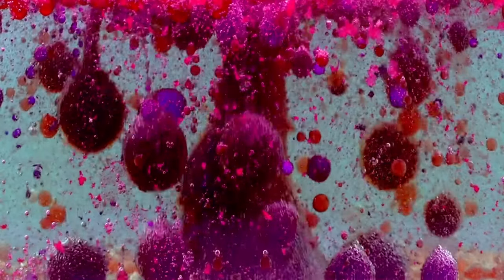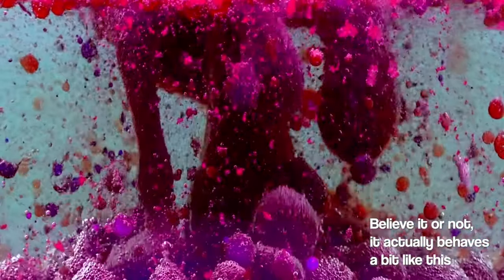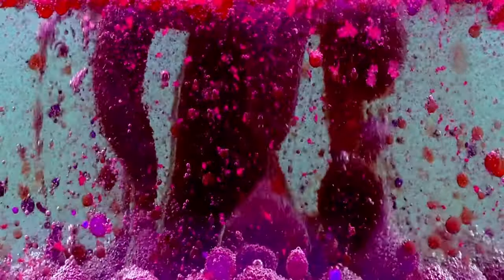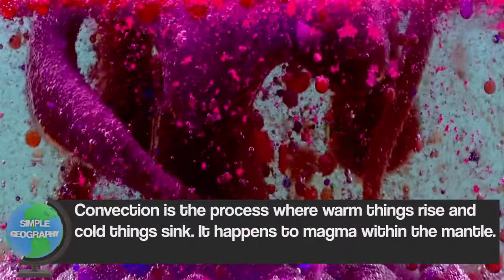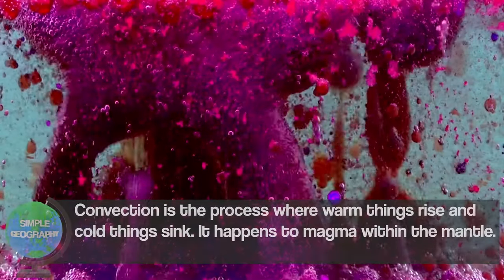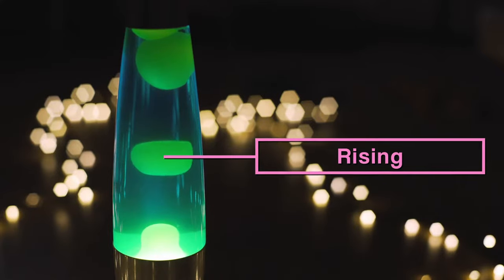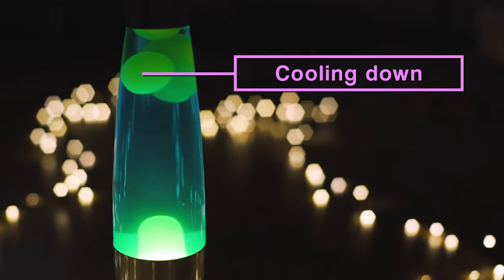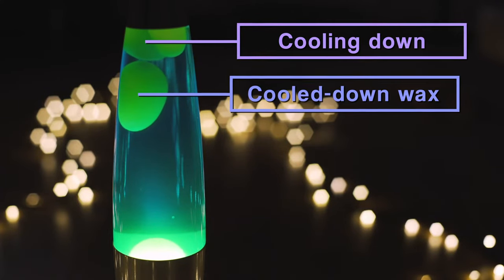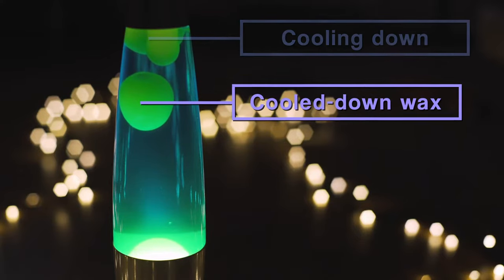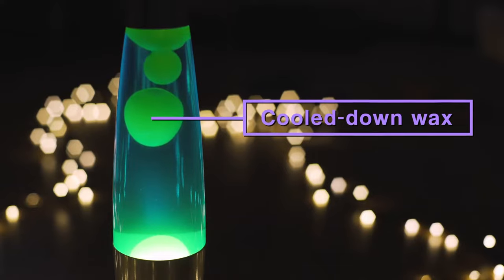There is a process going on inside the mantle called convection. This is really important to understand, so let us explain it a little bit more. Convection is the process where warm things rise and cold things sink. A good example of this is a lava lamp. The light at the bottom of the glass tube heats up the blobs of wax, causing them to rise up within the water. They reach the top of the tube and cool down, eventually getting cool enough to sink back down towards the heat source, and the cycle starts again.